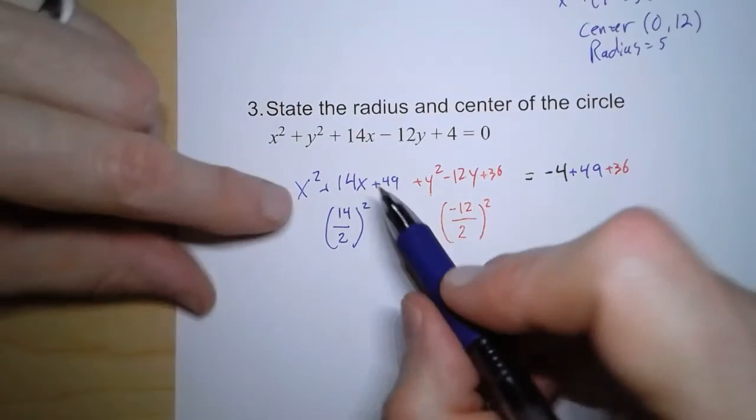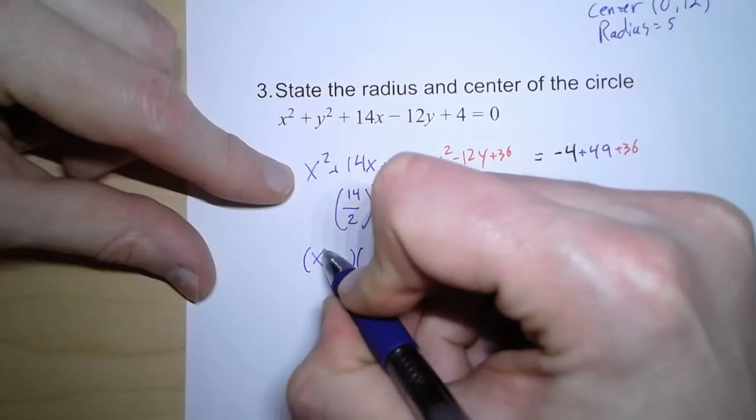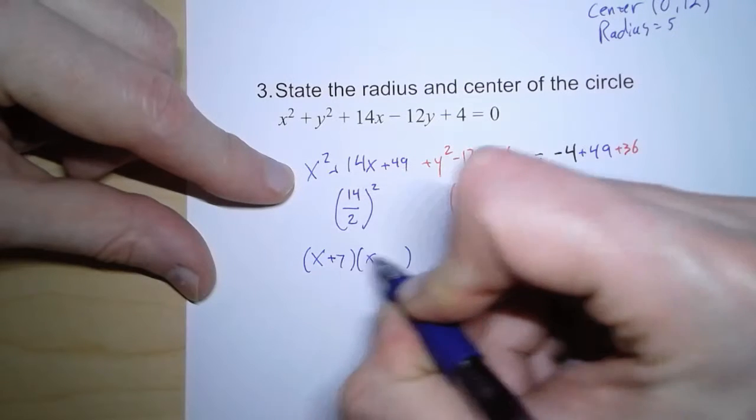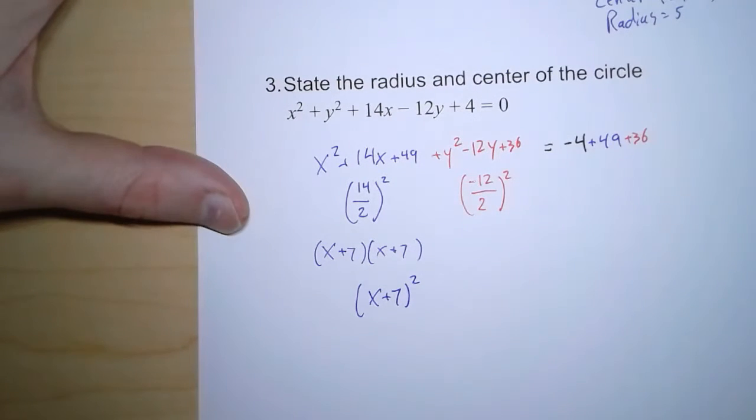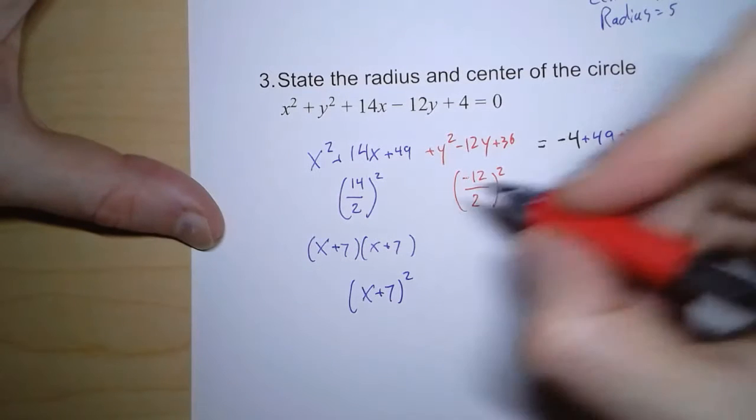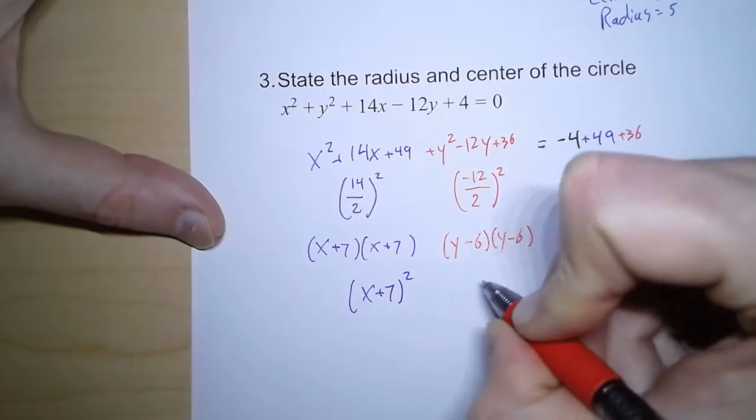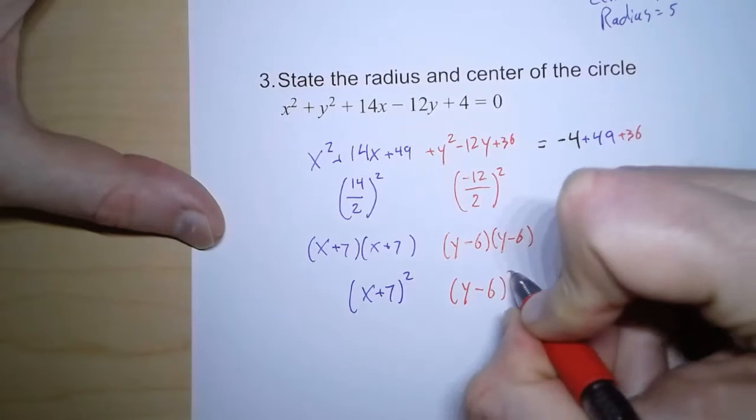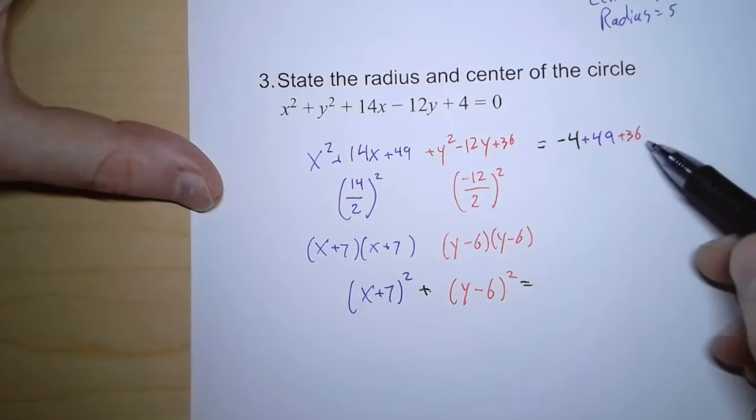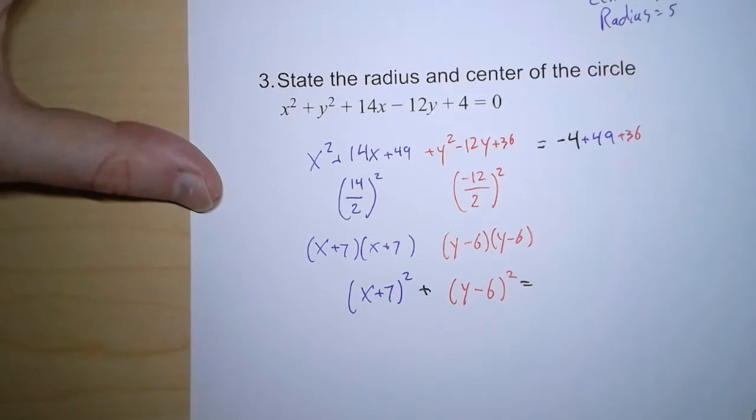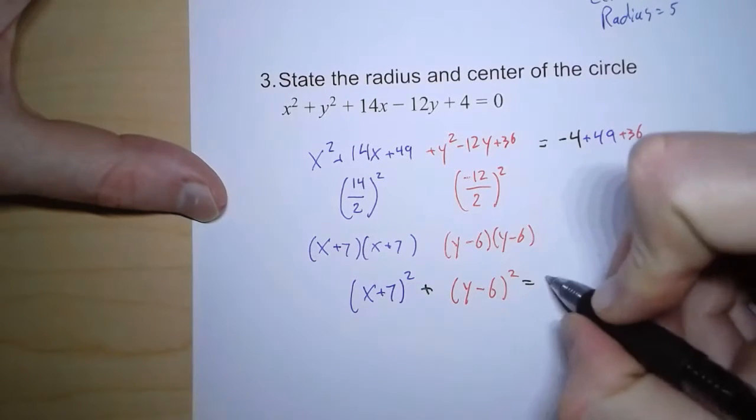Now what I can do is I can look at this in blue and say, well, I can factor this. And so this factors into x plus 7 plus 7, or more simply, x plus 7 quantity squared, which is what we're going after. We want it to be in that squared form. So in red, I can write this as y minus 6 times y minus 6, or y minus 6 quantity squared. And then over here, I take 49 plus 36, and then I subtract away 4.